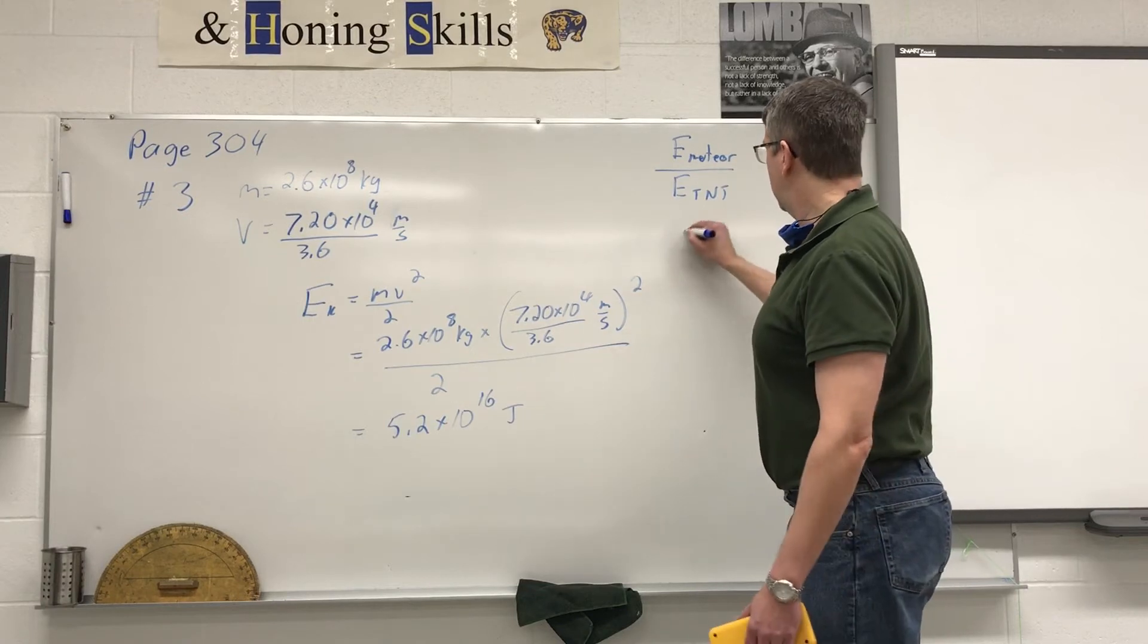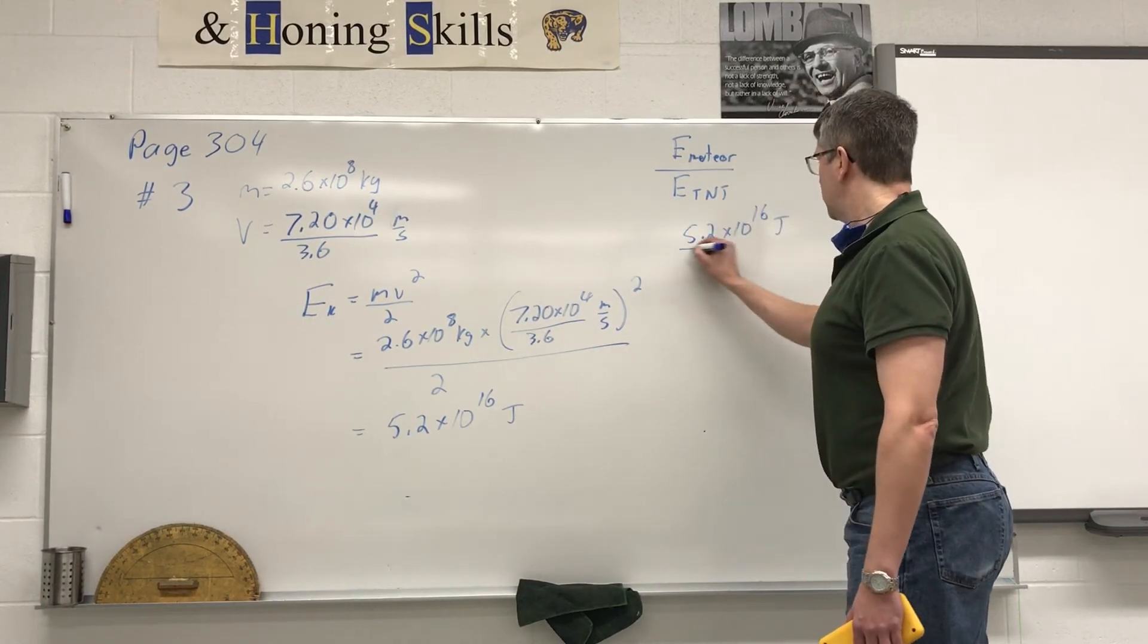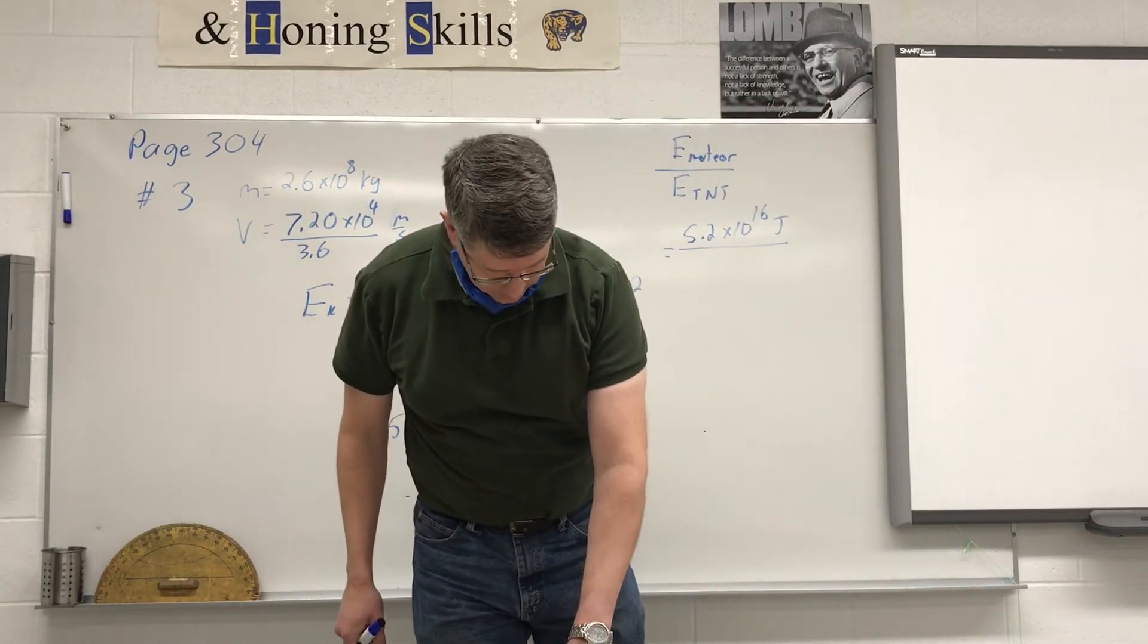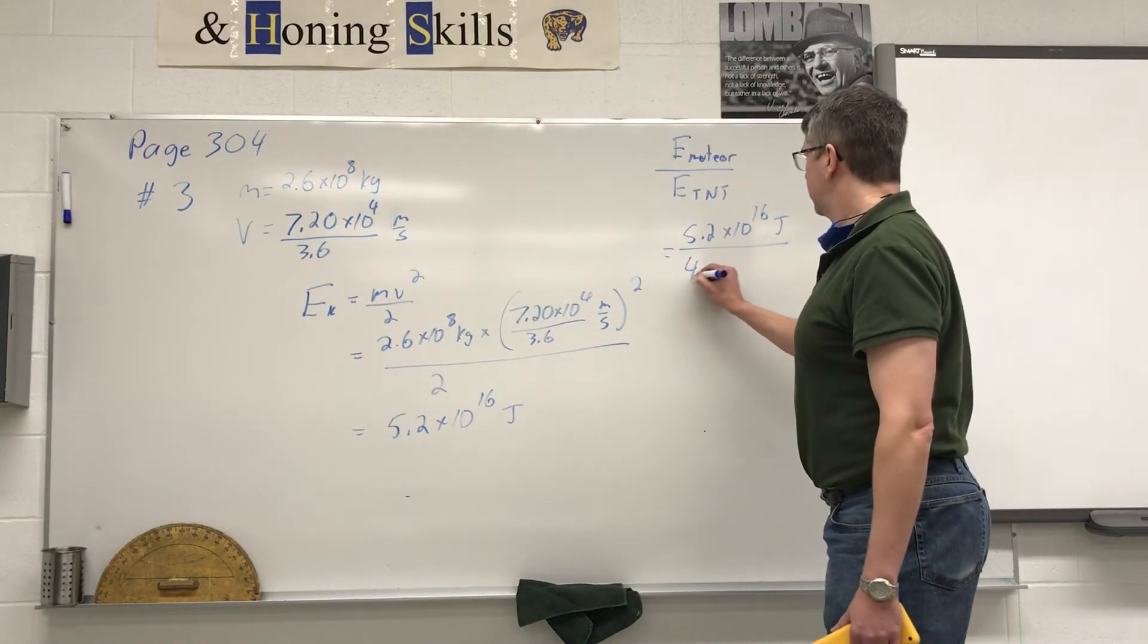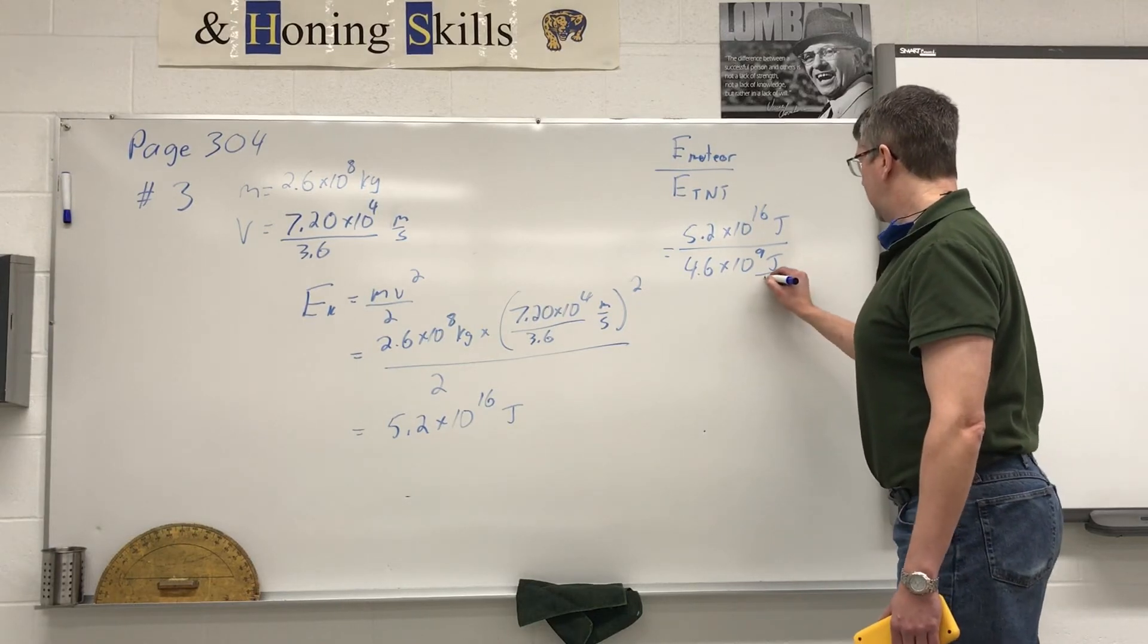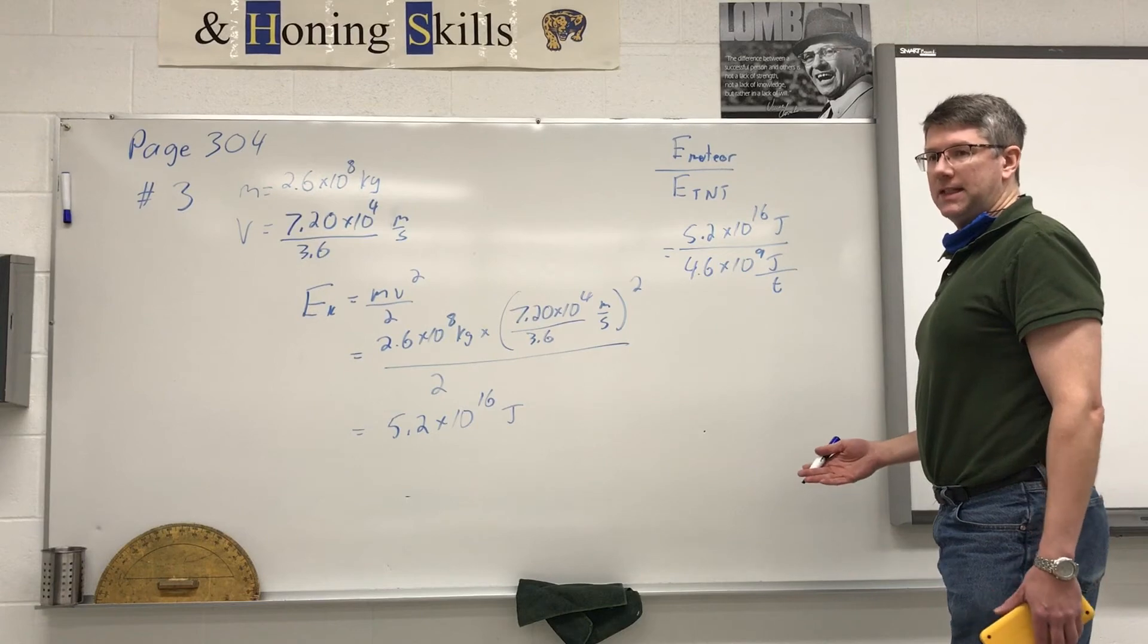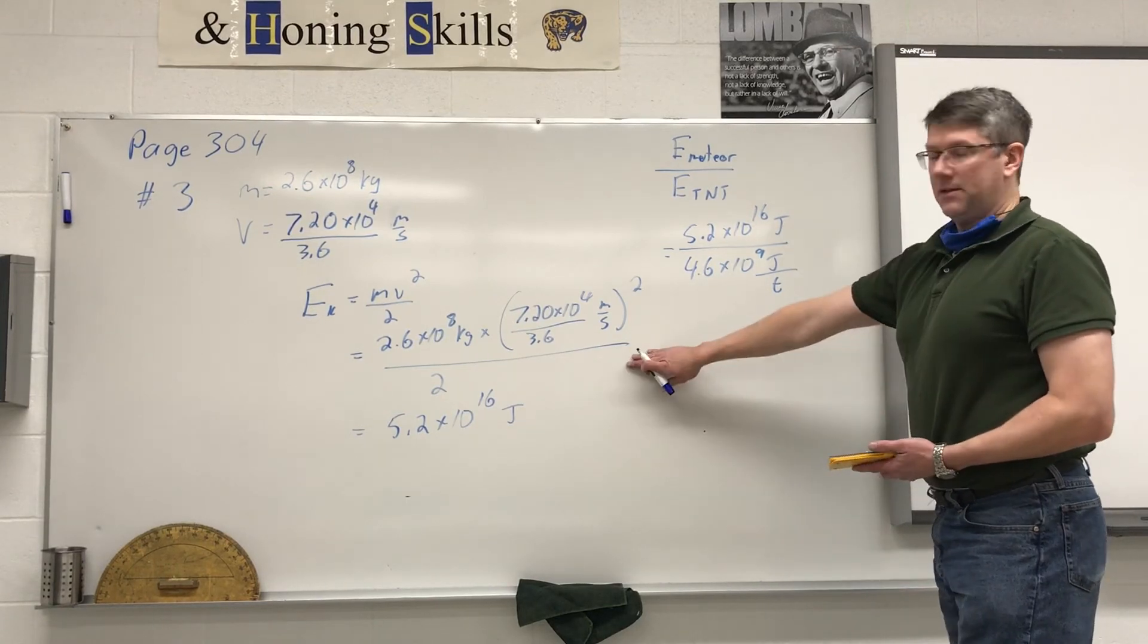So we know our meteor is 5.2 times 10 to the power of 16 joules and for our ton of TNT it's 4.6 times 10 to the 9, and that is for 1 ton of TNT. So we're figuring out how many tons of TNT are required to make the same amount of energy as the meteor had.